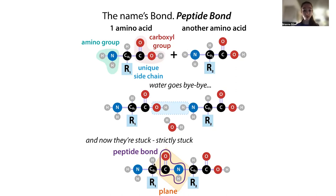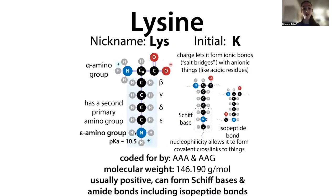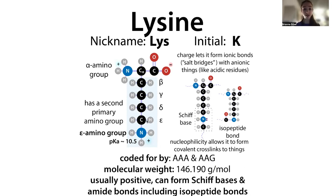With lysine, the same type of reaction happens at the backbone, but lysine also has a second amino group in its R group — its side chain. We call this the epsilon amino group, because it's attached to the epsilon carbon. The carbon attached to the side chain, carbonyl carbon, and nitrogen is the alpha carbon, and going down the chain we use the Greek alphabet: beta, gamma, delta, epsilon.